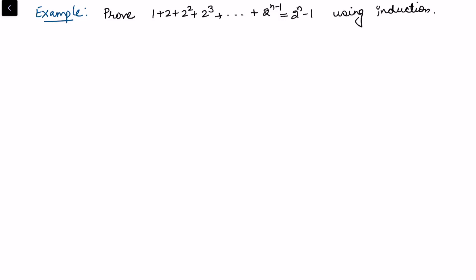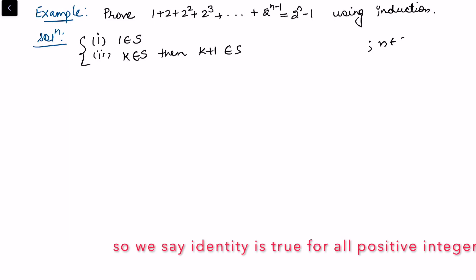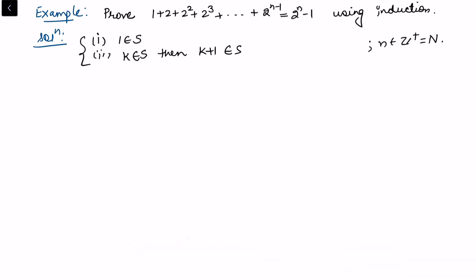For the solution, we consider the set of positive integers S with two conditions: first, 1 belongs to S; second, whenever k belongs to S, k plus one must also belong to S. Using these two conditions we conclude that S consists of all positive integers, and hence the result is true for all n in the positive integers.